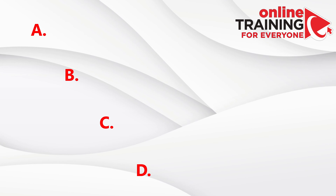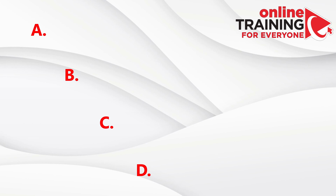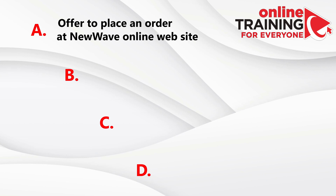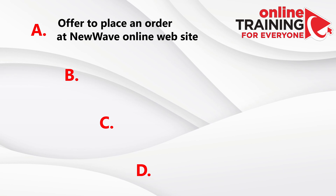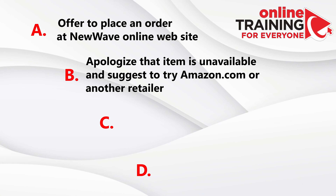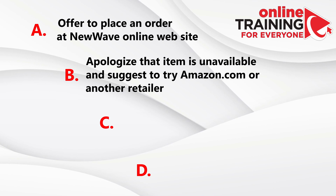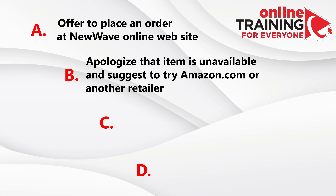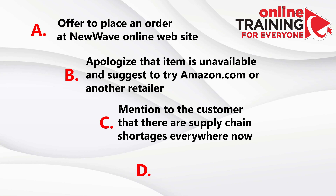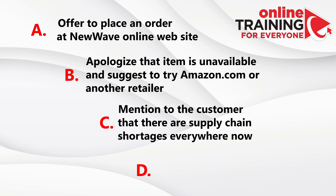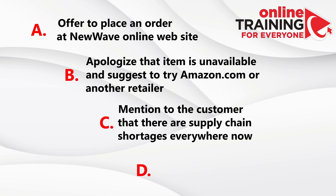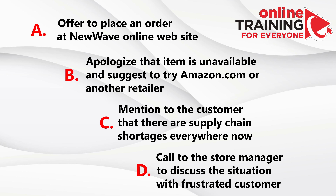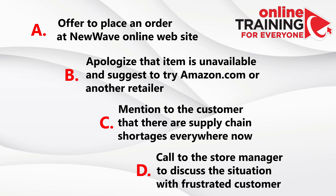You are presented with four choices and need to select all that apply. Choice A: Offer to place an order at the New Wave online website. Choice B: Apologize that the item is unavailable and suggest trying Amazon.com or another retailer. Choice C: Mention to the customer that there were supply chain shortages everywhere. Choice D: Call the store manager to discuss the situation with the frustrated customer.